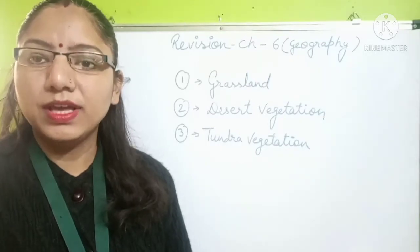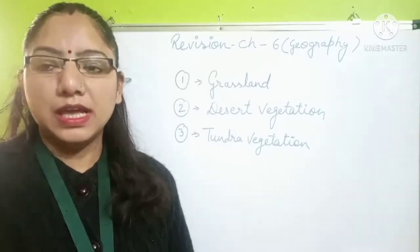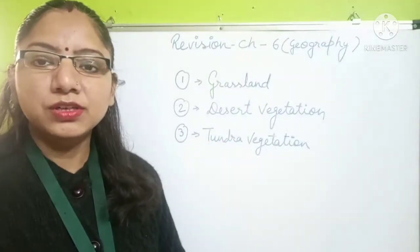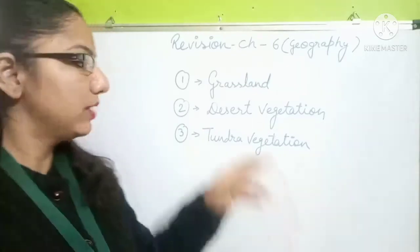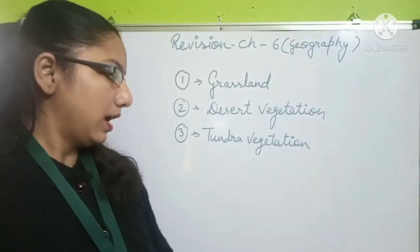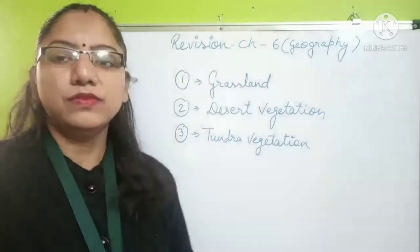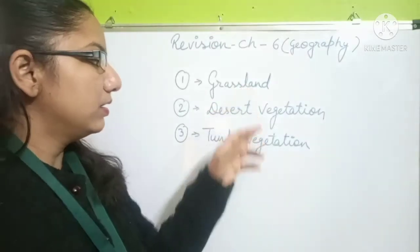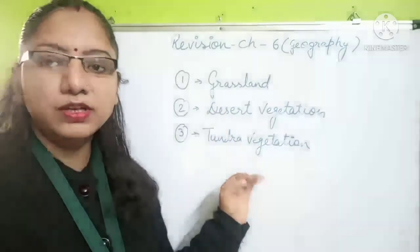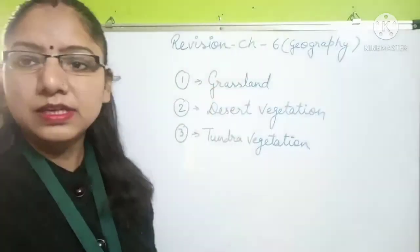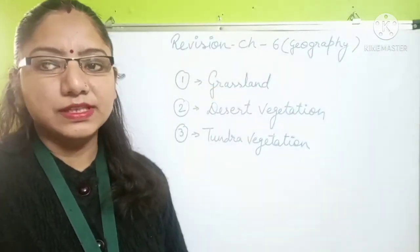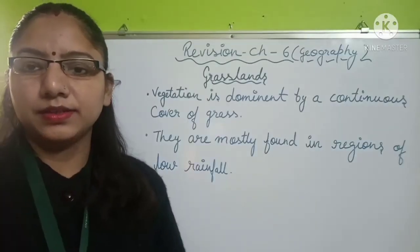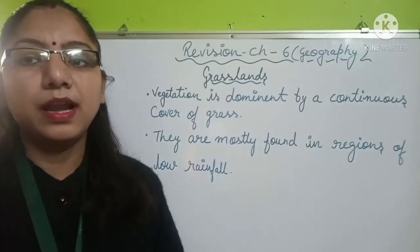A short intro first: grasslands are where vegetation is found in the form of grass, due to less water availability. Desert vegetation is the vegetation grown in desert areas. Tundra vegetation is grown near the tundra region. We will study the areas, the vegetation, and the wildlife of these three areas.